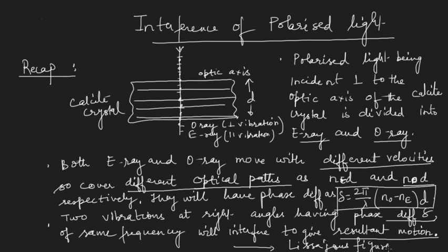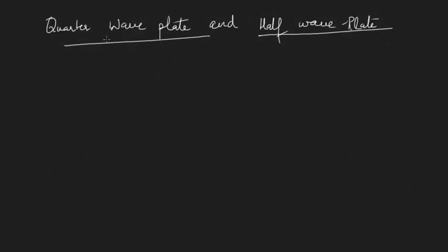These resultant figures are known as Lissajous figures, and depending upon the phase difference we can categorize them in different names. We can use this phenomenon of interference of polarized light to fabricate new devices known as the quarter wave plate and the half wave plate.